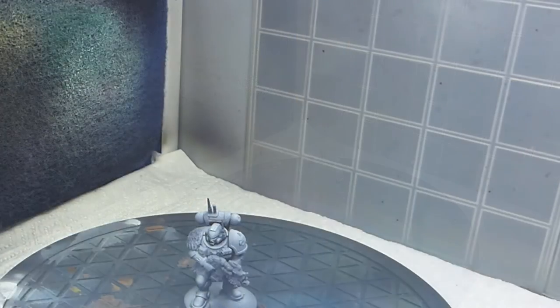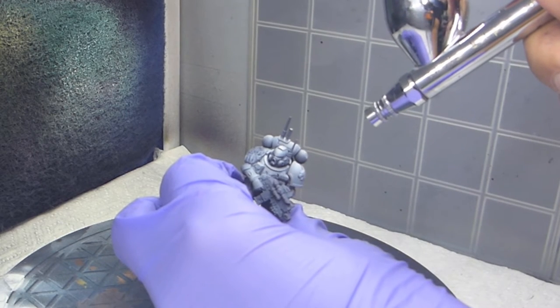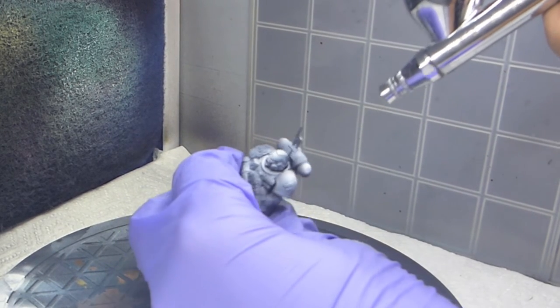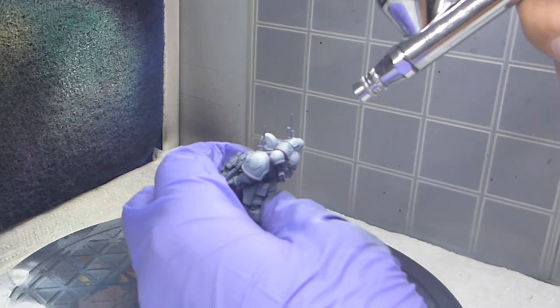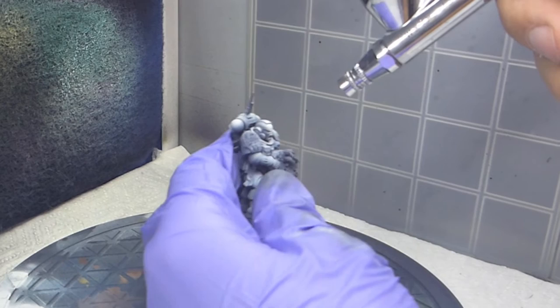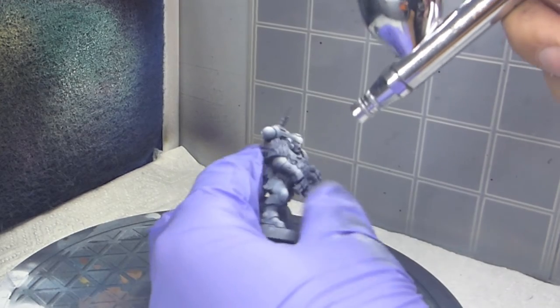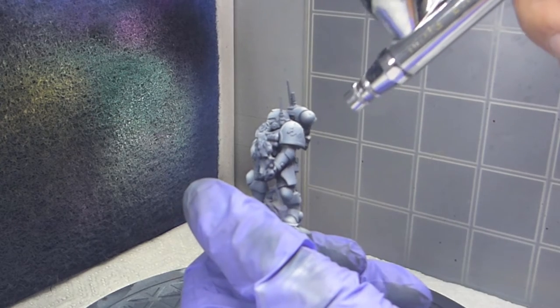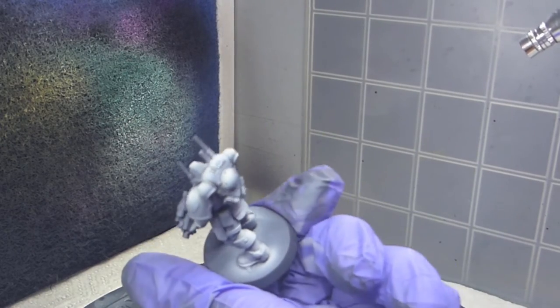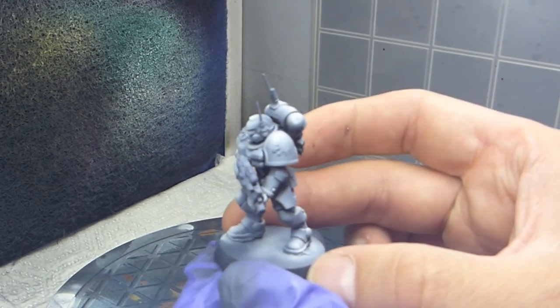The next color we're going to use is Dead White, and I basically go over the exact same areas as I did with the Wolf Gray, but just a little smaller, a little bit more focused. It's a really light highlight that we are going to do here in very specific areas of the model—the knee pad, the head, the shoulder pads, on top of the gloves, the calf, the tip of the toes, the backpack—just to emphasize the highlight a bit. And there we go.